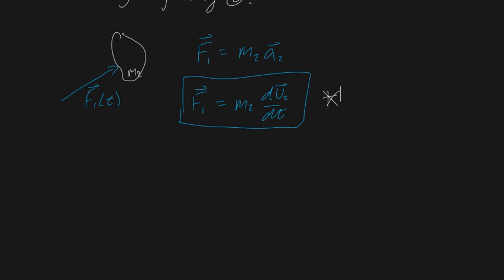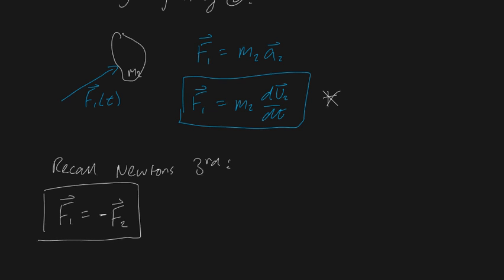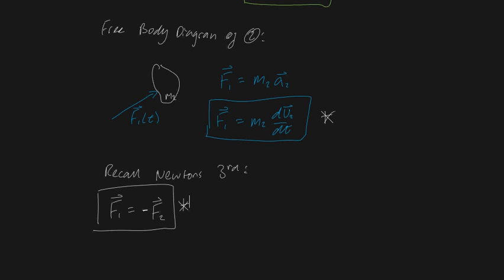Fortunately, this is where Newton's third law comes in. Every action has an equal and opposite reaction — every force is coupled with an equal and opposite force. So we can say that force 1 is equal in magnitude but opposite in direction to force 2. Just imagine throwing a basketball against the wall: during their collision, the wall exerts a force back on the basketball and the basketball exerts a force on the wall. So we've got three formulas now and we can equate them all.